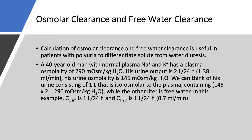We need this concept in patients with polyuria to distinguish solute diuresis from water diuresis. Take this example: a 40-year-old man has a plasma osmolality of 290 milliosmol per kilogram of water, a urine output of 2 liters, and a urine osmolality of 145. This urine can be thought of as consisting of two components: one liter of free water (CH2O = 1 liter) and one liter isoosmolar to the plasma. Because 145 × 2 = 290, which equals the plasma osmolality, confirming the math.